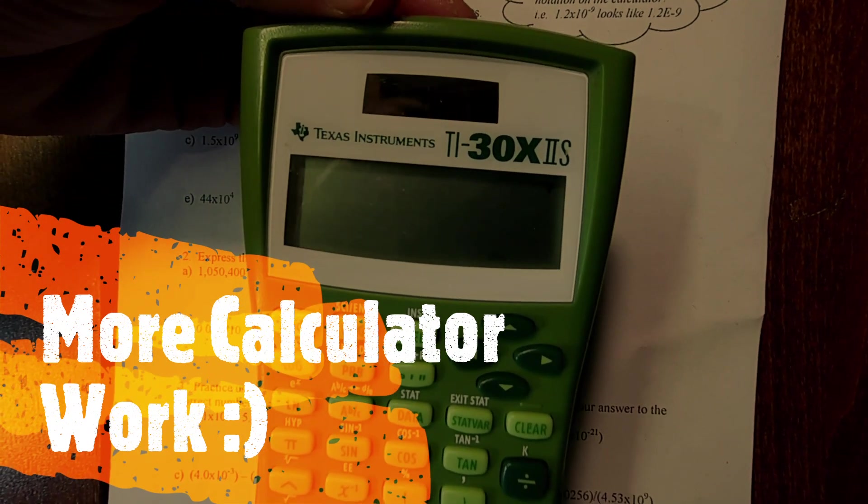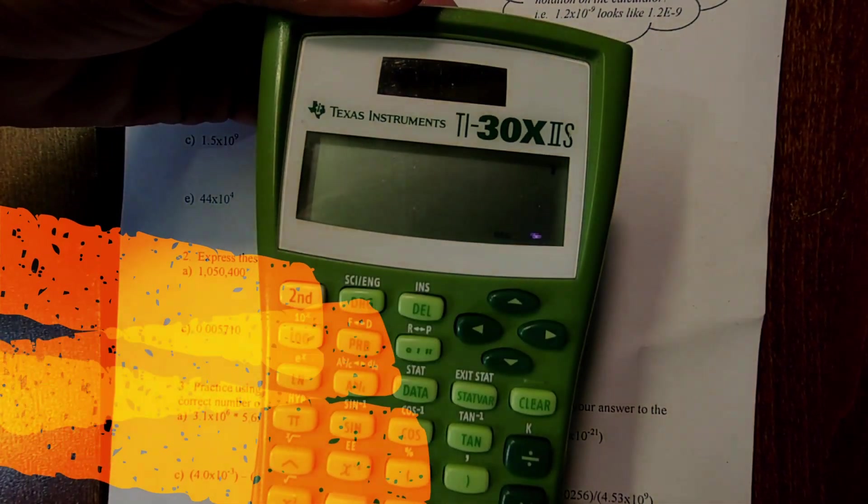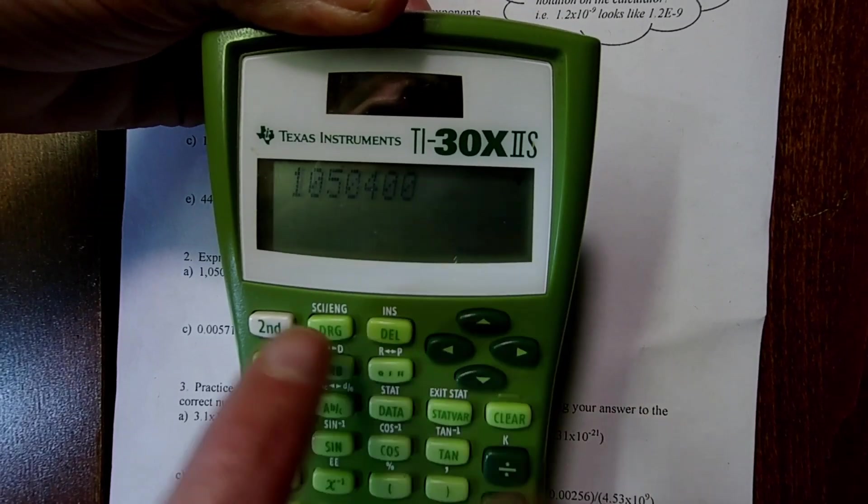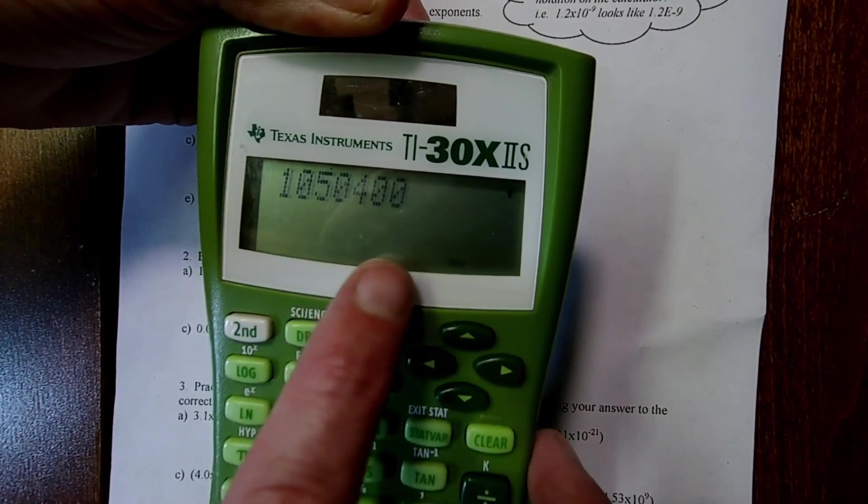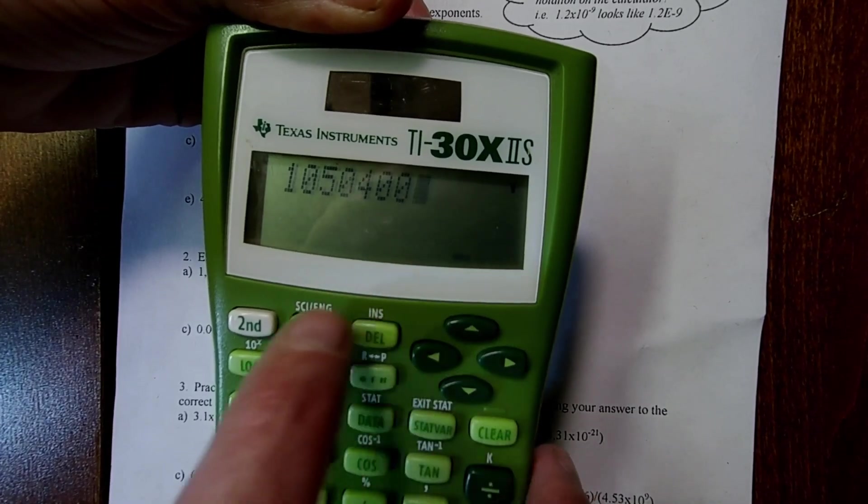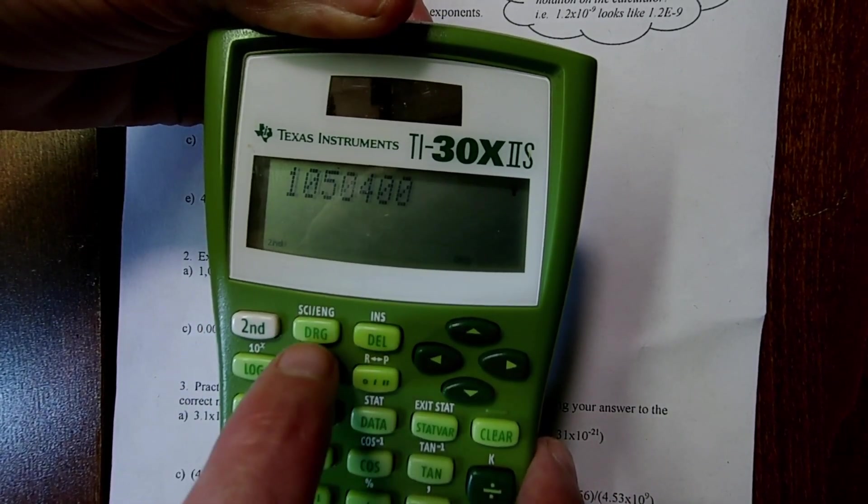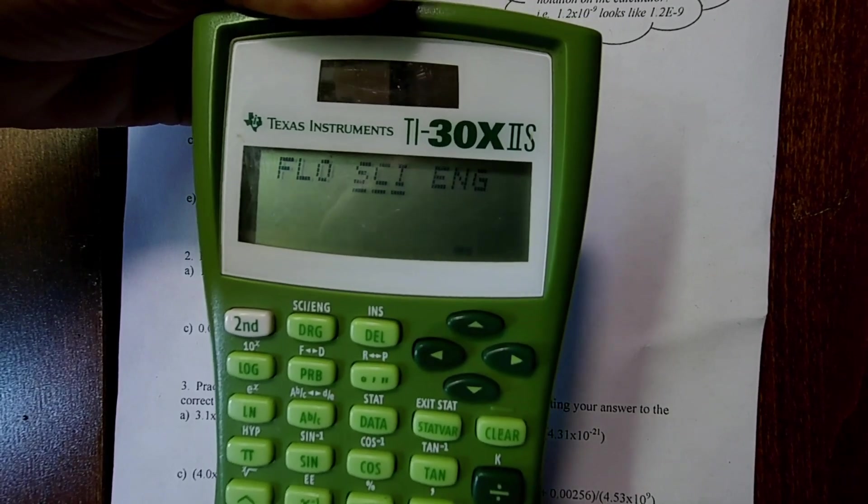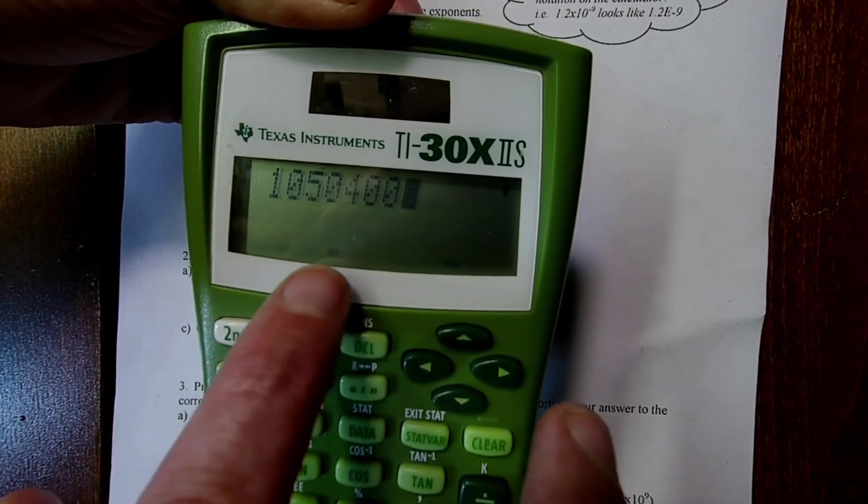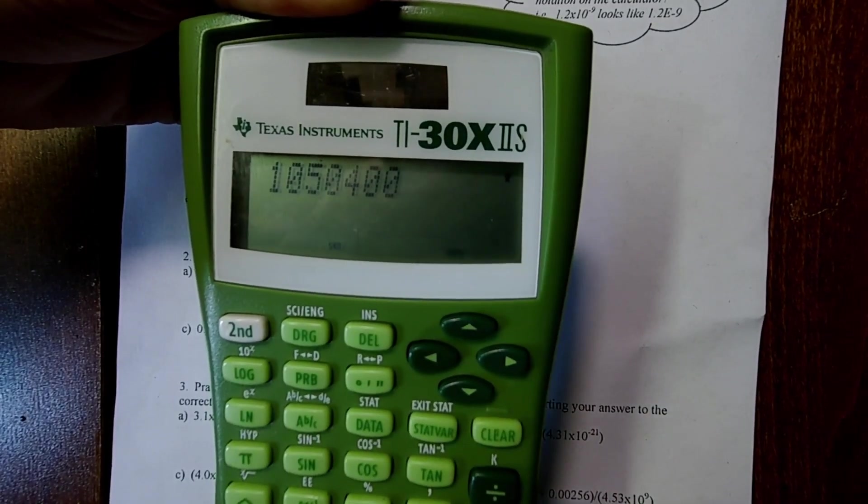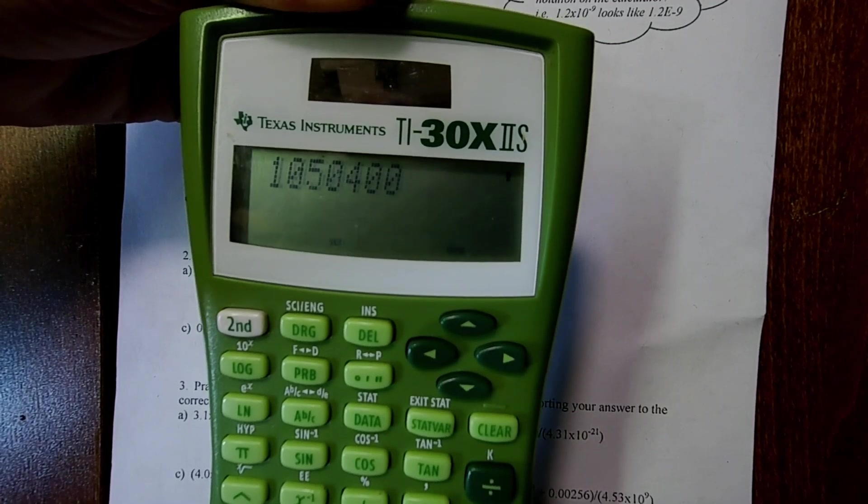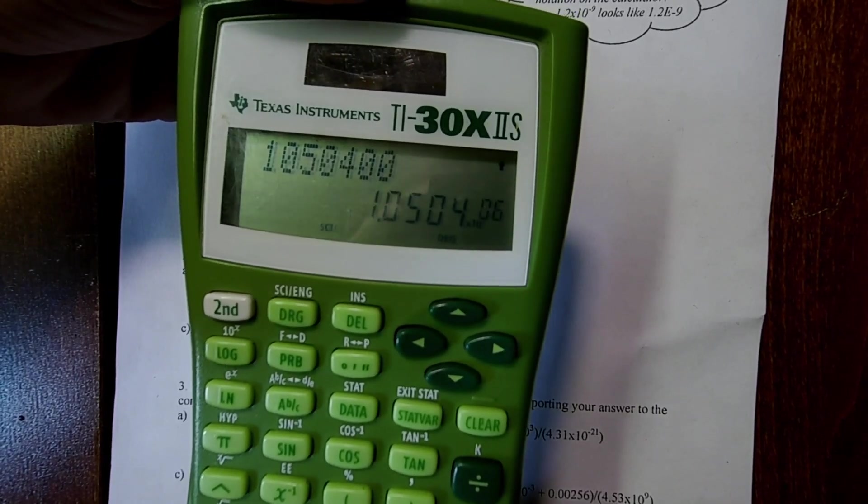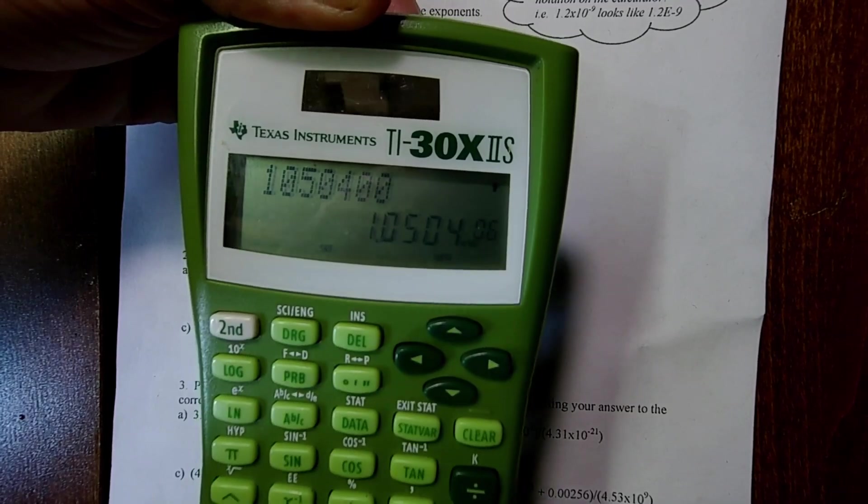Let's check our answer to 2a using our calculator. So I'm going to type in the number, 1,050,400. And then I'm going to change it to scientific mode. If I was in scientific mode already, it would show up on the bottom here. I don't see it. So 2nd, and then hit the degree. Now I'm going to cursor over and select SCI for scientific. And when I hit enter, notice how SCI pops up on the bottom there. That tells me that I'm in scientific notation mode. And now I hit enter. And as you can see, it's 1.0504 times 10 to the sixth. So that verifies the work we just did on the board.